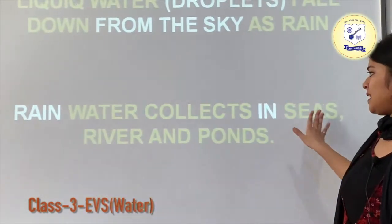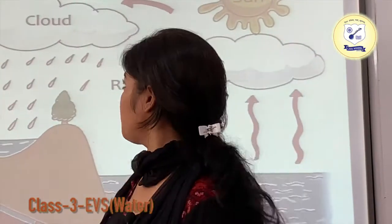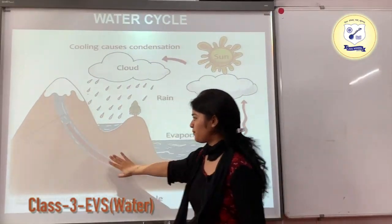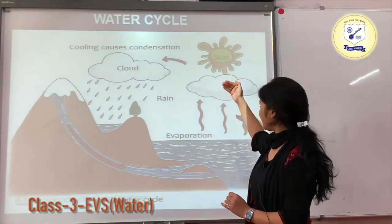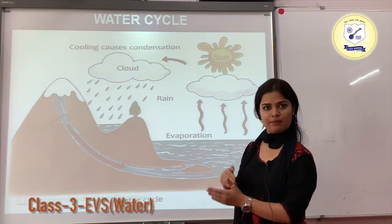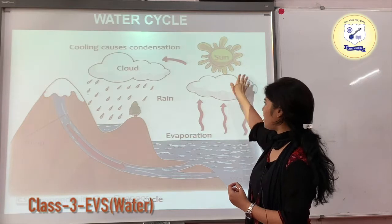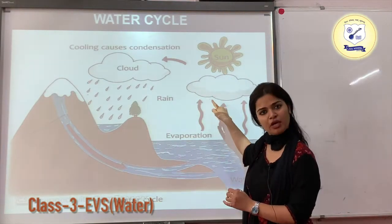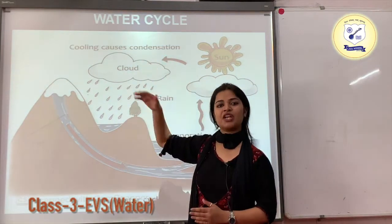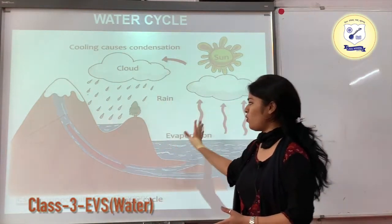Rainwater collects in seas, rivers, and ponds — this is the complete water cycle. As you can see in the diagram, the river water evaporates due to sun's heat, rises as water vapour, collects to form clouds, and on cooling, the heavy clouds start raining, returning water in liquid form as rain. This is the whole water cycle.